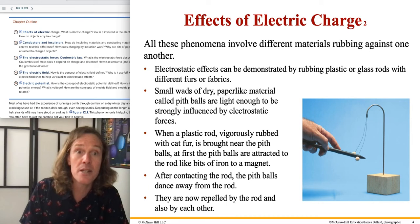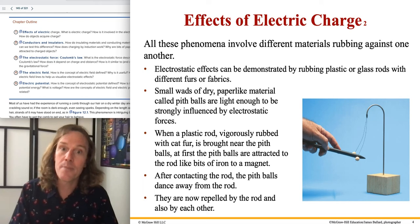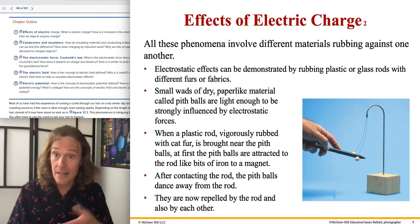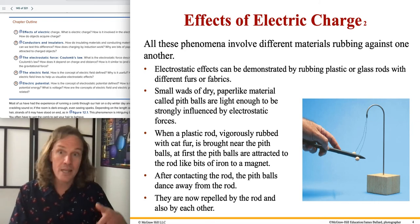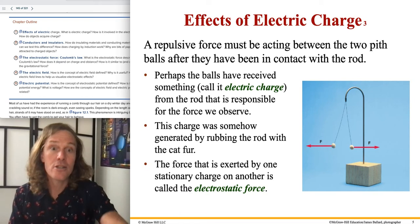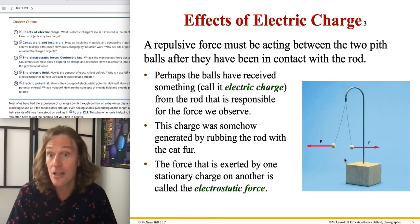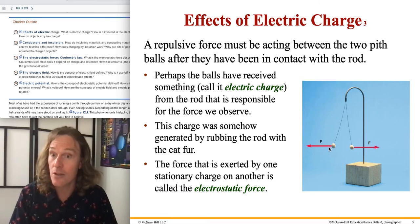Electrostatic effects can be demonstrated by rubbing plastic or glass rods with different furs or fabrics. Small wads of dry paper-like material called pith balls are used because they're very light — that's the key reason. Being so light, they can move easily and show angular deflection, because the angle the string makes reflects the proportion between the gravitational force vector pointing straight down and the horizontal Coulomb force vector.